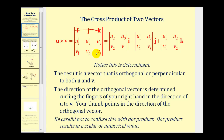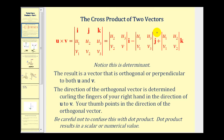The remaining elements form a two by two determinant, and we'll multiply that by vector i. Then we subtract the determinant formed by eliminating row one and column two — that leaves u1, u3, v1, v3 — multiplied by the j vector. Then we add the determinant formed by eliminating row one and column three — that leaves u1, u2, v1, v2 — multiplied by vector k.